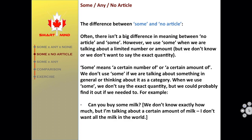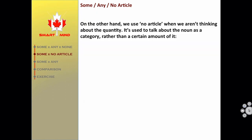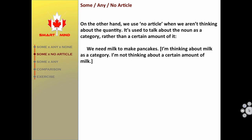I don't want all the milk in the world. On the other hand, we use no article when we aren't thinking about the quantity — it is used to talk about the noun as a category rather than a certain amount of it. For example: 'We need milk to make pancakes.' I'm thinking about the milk as a category, not thinking about a certain amount of milk.